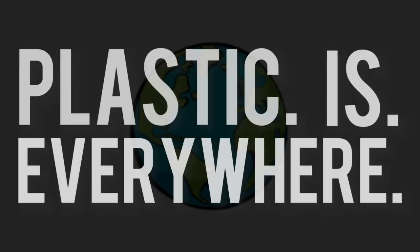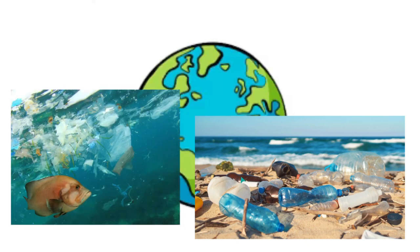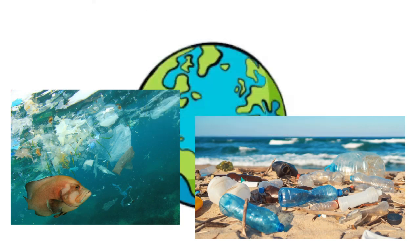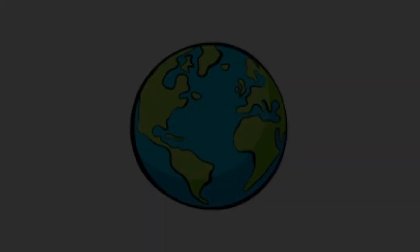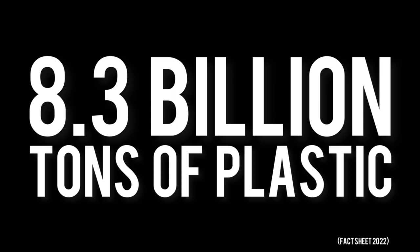Plastic is everywhere. We use it every day and it has become a large pollution problem across the globe, especially in marine ecosystems. The scary part is that it has become such a big issue in such a short amount of time. Plastic has only been widely used since the 1950s, when throwaway living and single-use plastics were first introduced. Since then, 8.3 billion tons of plastic have been produced and virtually all of it is still on this planet.